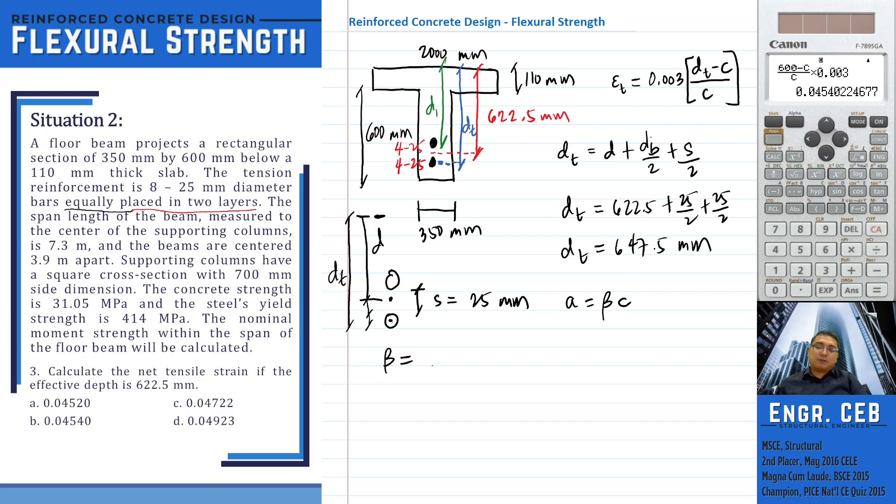Since the given value of Fc prime is greater than 28 megapascal, beta is computed using the following formula, 0.85 minus 0.05 over 7 times 31.05 minus 28.